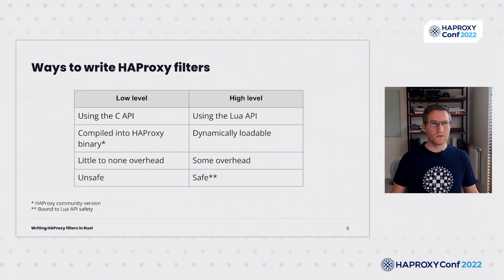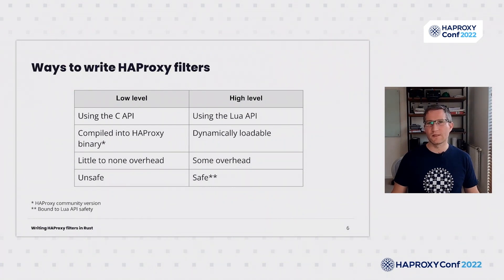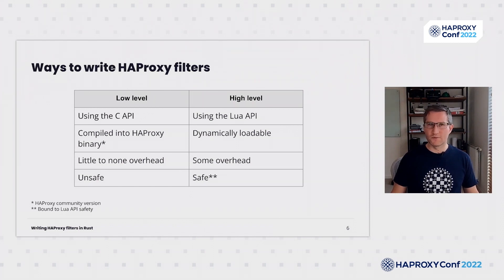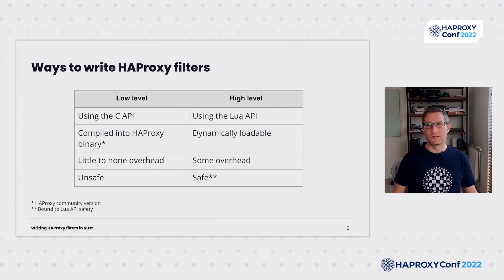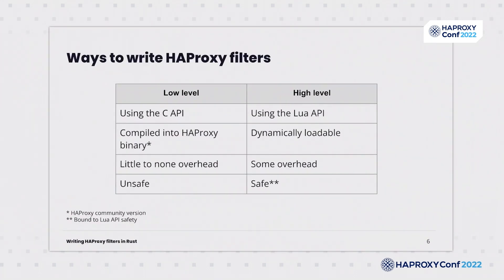In the HAPROXY source code, you can find a set of C headers that describe HAPROXY internal data structures and functions that can be used to write filters. Usually C filters are compiled into the HAPROXY binary. As a benefit, they have little to no overhead, but the main disadvantage is that you need to write relatively low-level code in C and be familiar with HAPROXY's internal API. Any wrong instruction can crash your HAPROXY, cause undefined behavior, or corrupt memory. As an alternative, HAPROXY provides a high-level API to declare filters using Lua. The filters can be dynamically loaded and rely on the API's stability and safety. Unfortunately, this has non-zero costs, and you should expect extra data copying between HAPROXY and Lua. Plus, Lua is a language with automatic memory management through garbage collection, which is unfortunately also applicable to its API.